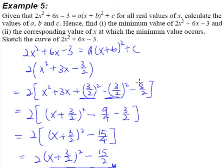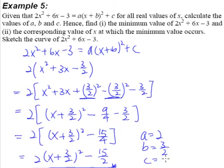By simply comparing, we can tell that A is equal to 2, B is equal to 3 over 2, and C is equal to 15 over 2. These are the values of A, B, and C. We have completed the first part.